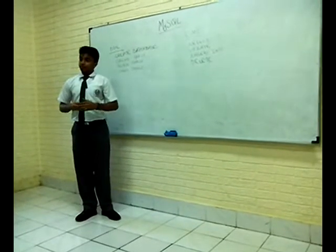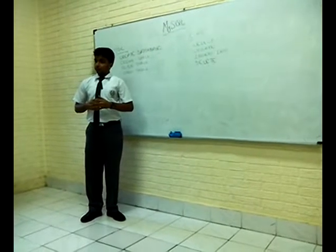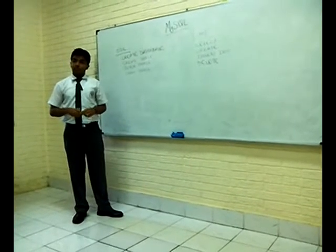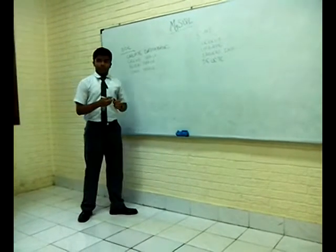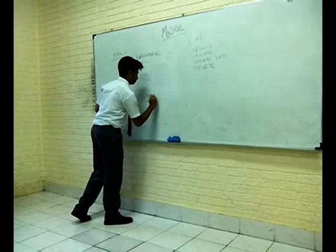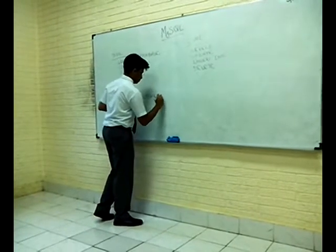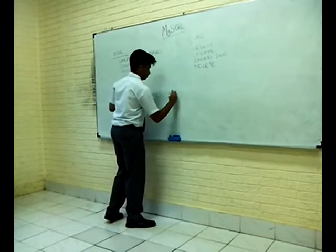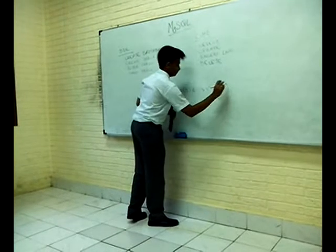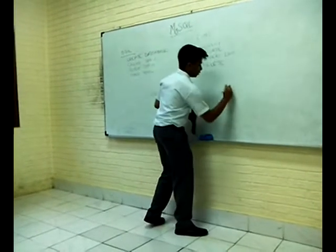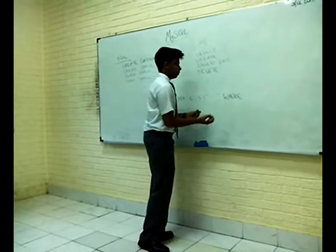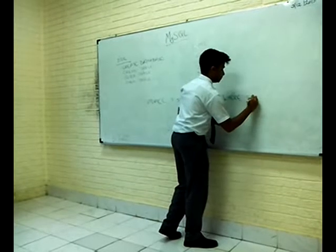Can you tell me the syntax of update? Update the table name, set the column name equal to the value, and then the condition also. Where gives the condition, like if I give serial number is equal to one.